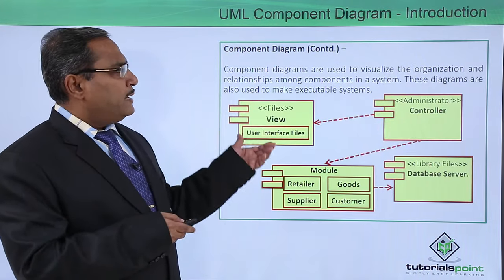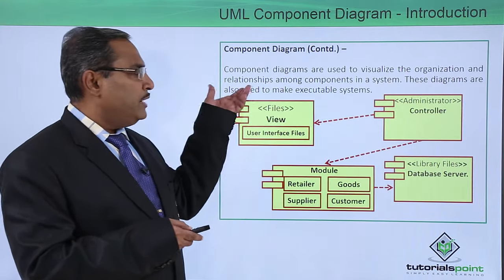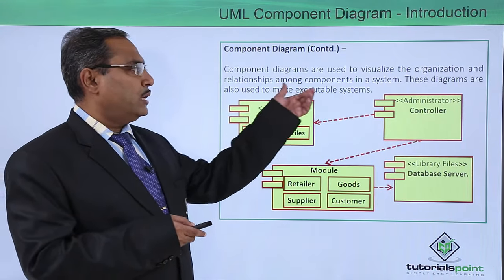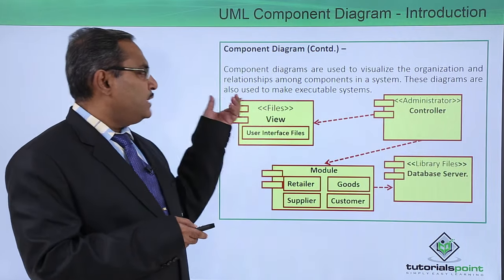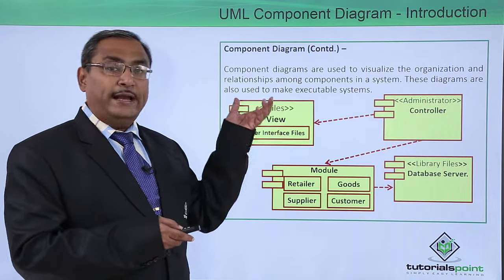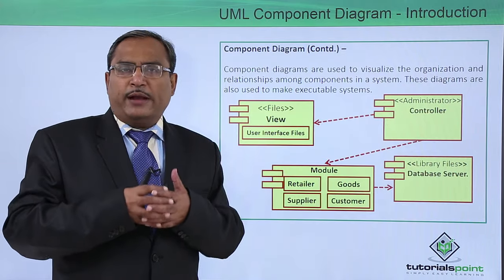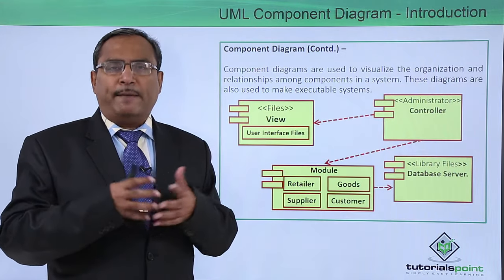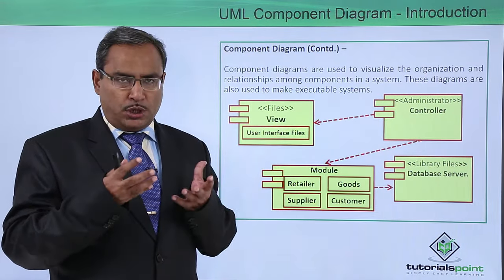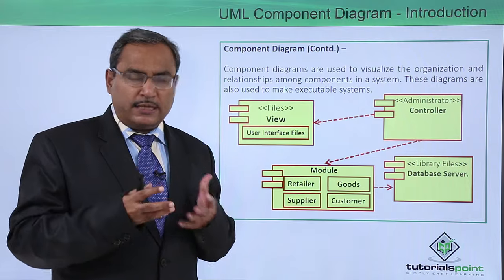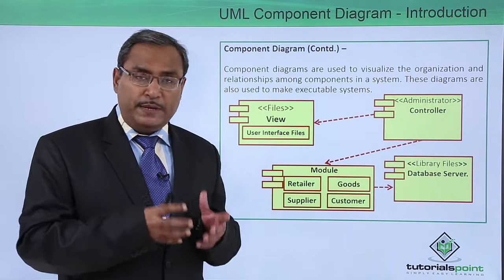Component diagrams are used to visualize the organization and relationships among components in a system, and these diagrams are also used to make executable systems. That means if you want to make one running application — one application which will execute — this component diagram can easily be used.